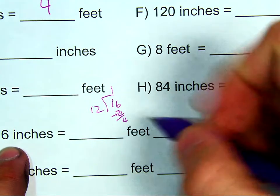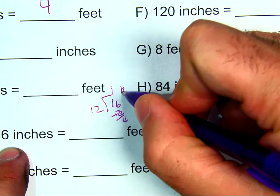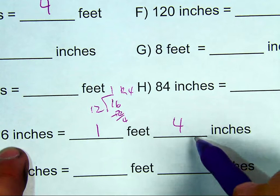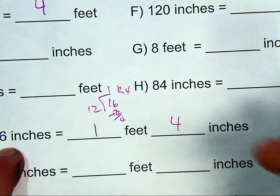So my 4 is going to be here, so I have 1 remainder of 4. I have 1 foot and 4 inches left over. So 16 inches is 1 feet and 4 inches.